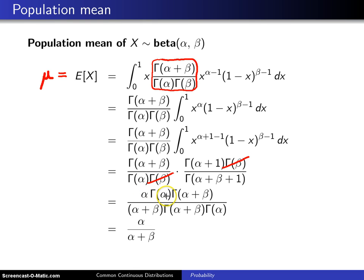and likewise gamma of alpha plus beta plus 1 can be written as alpha plus beta times gamma of alpha plus beta.